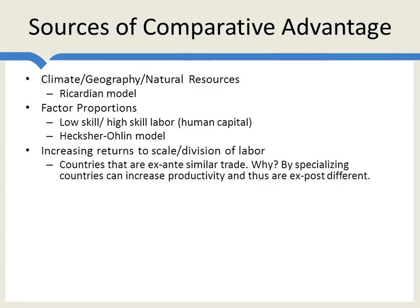By specializing, countries can increase their productivity — they become ex-post different. After they specialize, they become different, and then they can trade based upon those increases in productivity. For example, we don't need every single country to have its own automobile plant. It's better to specialize, with one or two or half a dozen countries producing automobiles, because you get economies of scale — it becomes cheaper to produce automobiles per unit the more automobiles are produced. So one country produces automobiles, another produces aircraft, another produces computerized chips. By specializing, countries take advantage of economies of scale, become more productive in one good or set of goods, and then trade for the other goods they want. It's still comparative advantage, but comparative advantage created afterwards in order to take advantage of increasing returns.